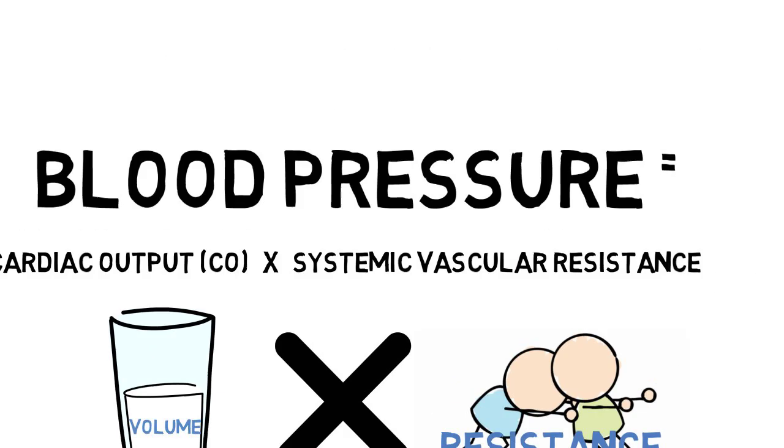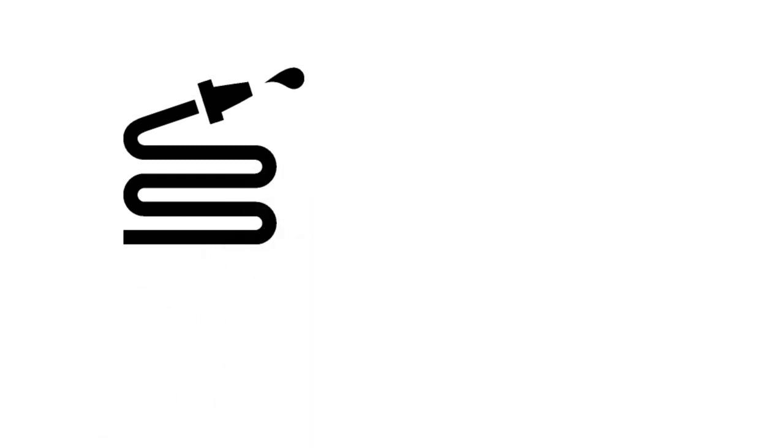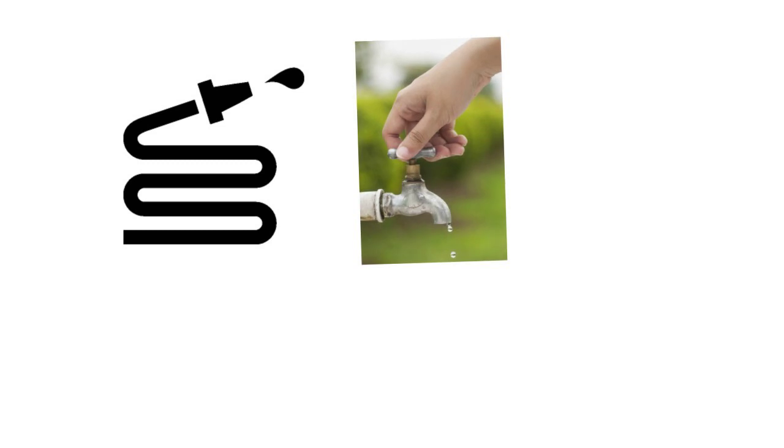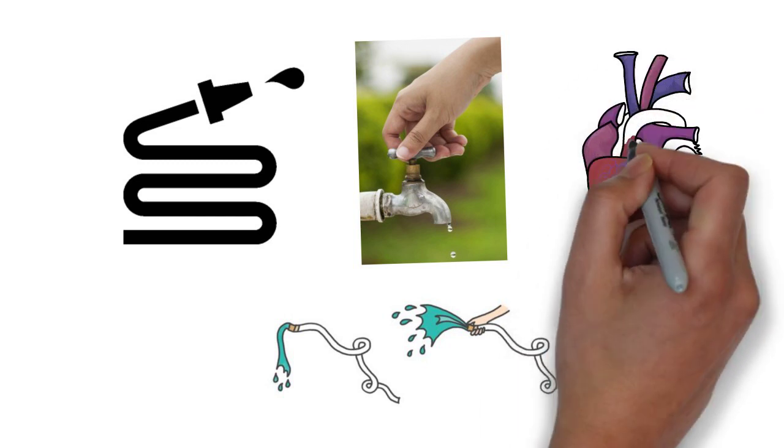Now the simplest way to understand blood pressure is to think of your everyday garden hose. Let's say you're watering your garden and you need more pressure in your hose. You can do one of two things. You can turn the knob to increase the volume running through the hose, or you can use your thumb to increase the resistance in the hose, thereby increasing the pressure. Our bodies essentially do the same thing.